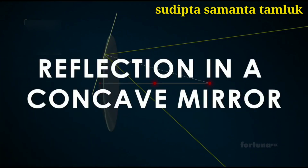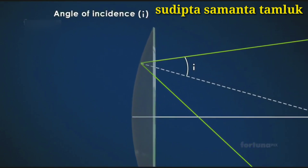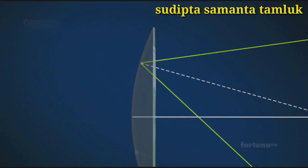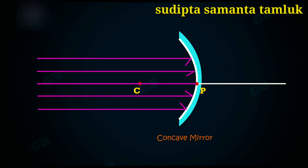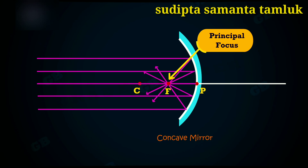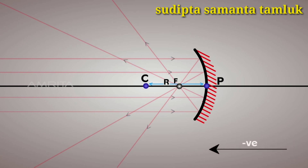Reflection in a concave mirror: a light ray strikes the mirror's curved surface and reflects according to the law of reflection — the angle of incidence equals the angle of reflection. The ray approaching the mirror is the incident ray, and the ray bouncing off is the reflected ray. Light rays parallel to the principal axis falling on a concave mirror all meet at a point on the principal axis called the principal focus of the concave mirror. According to sign convention, the focal length of a concave mirror is negative, as the distance is measured opposite to the incident rays.